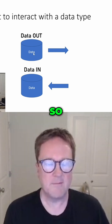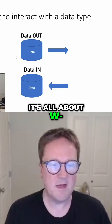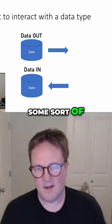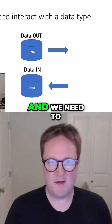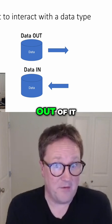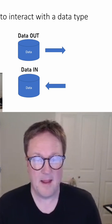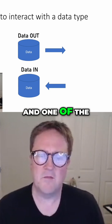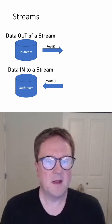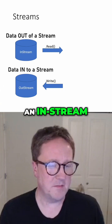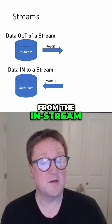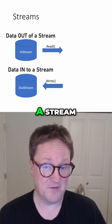It's confusing. So it's all about we have some sort of entity and we need to either get data into it or get data out of it. And the first one, and one of the oldest ones, are streams. So if we have an in stream, we can read data from it — reading from the in stream means that we're getting data out of a stream.